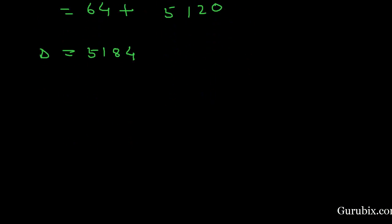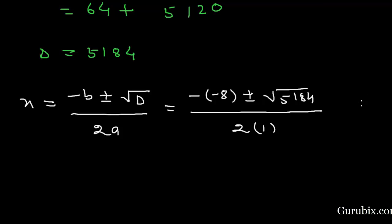Discriminant is 5184. And now we shall apply the quadratic formula, that is x equals minus B plus minus root D over 2A. B is minus 8, plus minus D is 5184, and A is 1.